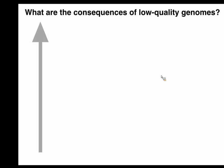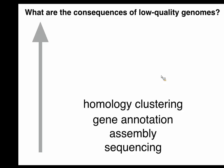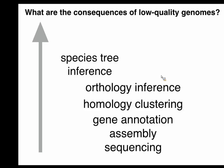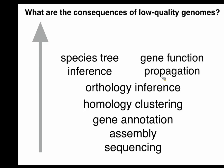If we think about the consequences of this noise, it's helpful to think about the analyses we perform. Typically it starts with sequencing, then assembly, then genome annotation, homology clustering, orthology inference, and then — depending on your interest — perhaps building species trees relating diversity at the species level, or correlating with functional aspects such as expression, traits, or functional annotations. The question is: with low-quality genomes, how is error propagating across all these pipelines, and how can we develop methods that are able to cope with these uncertainties and be somehow robust?